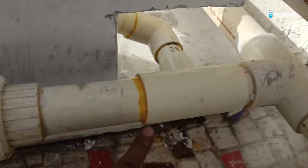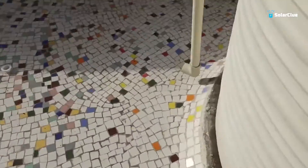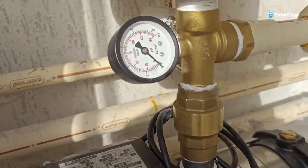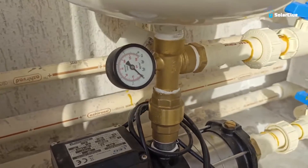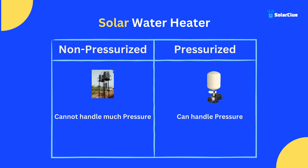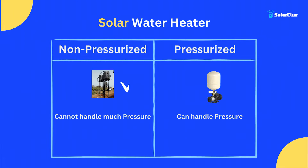If water is coming from a pressure pump — for example, if you live in a villa community, bungalow community, or an apartment where water comes from a centralized pumping system — then water arrives with a lot of pressure. In that scenario, your water heater must handle that pressure, so a pressurized solar water heater is required. Pressurized models have a heavier tank and higher thickness to handle the pressure.